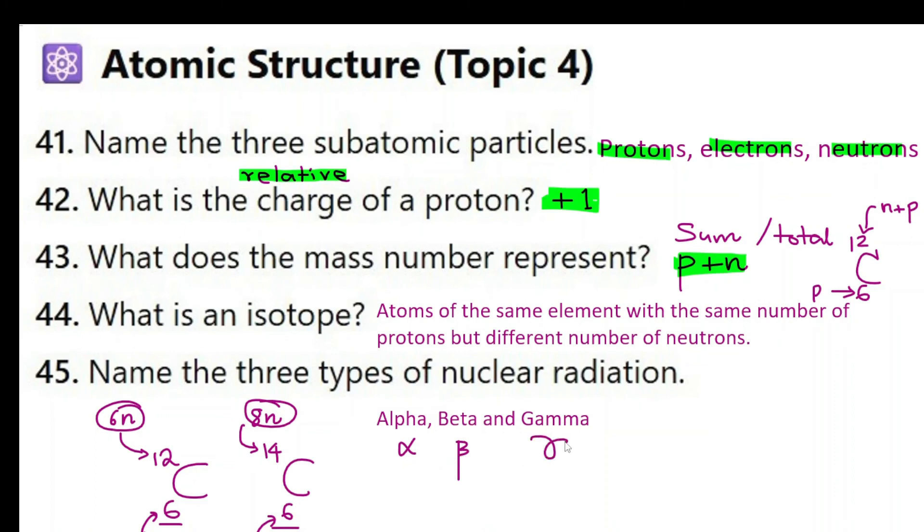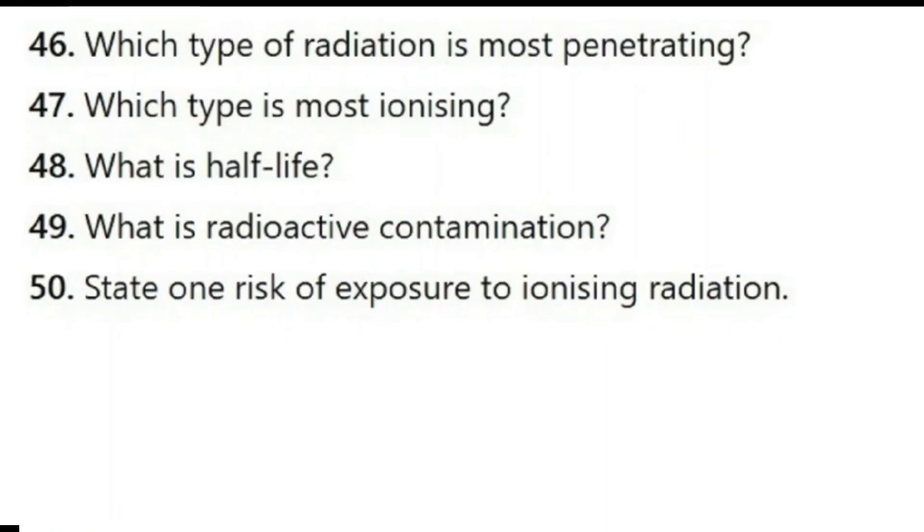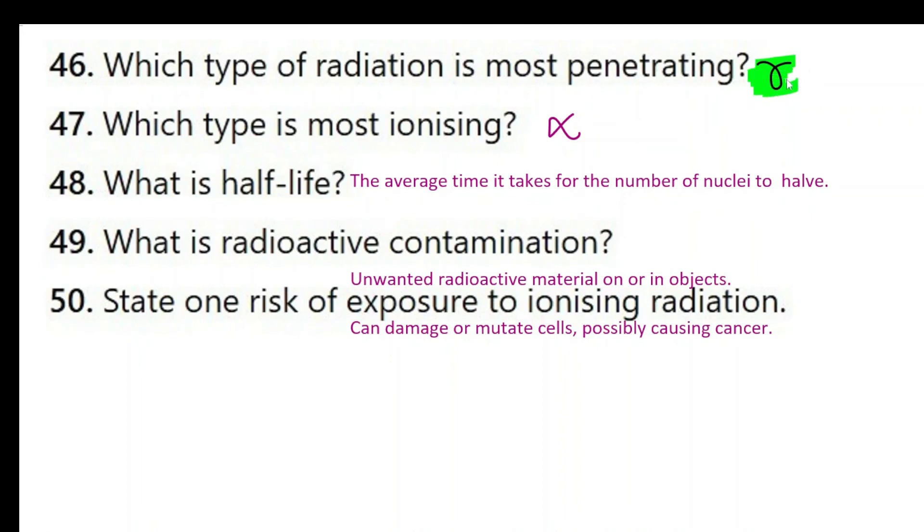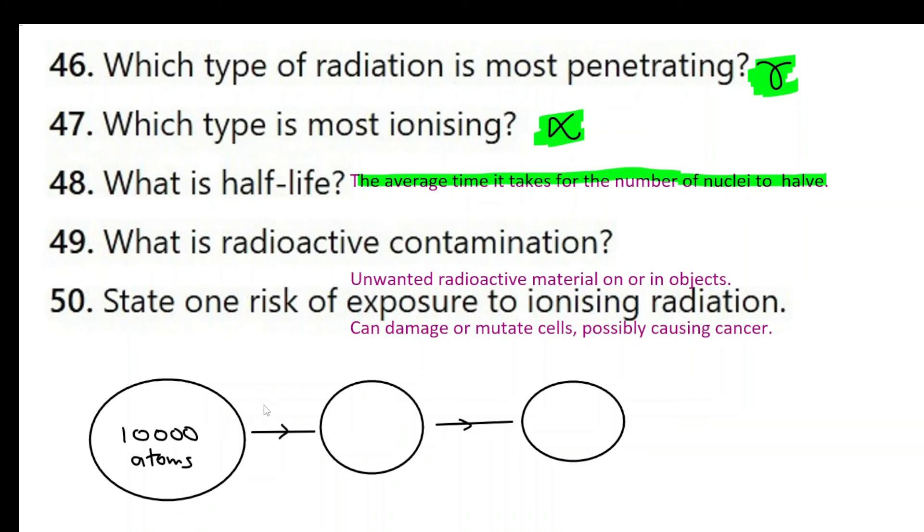Here are the last five questions. Pause the video and do them please. Which type of radiation is most penetrating? It's gamma radiation. Gamma radiation can penetrate through most material. You need thick lead or concrete to stop. Which type is most ionizing? The most ionizing radiation is alpha radiation. Half life is the average time it takes for the number of nuclei to half. Now imagine there is a sample of radioactive material which has 10,000 atoms to start with. Now if the half life is two hours, in two hours time what will happen? The number of nuclei will half. So you have 10,000 to start with, that will become 5,000. Now give it another two hours, 5,000 then becomes 2,500. Give it another two hours it will become 1,250 and so on and so forth.